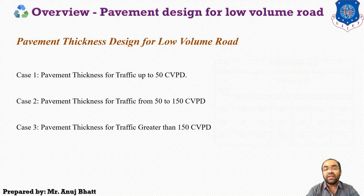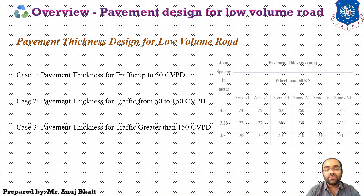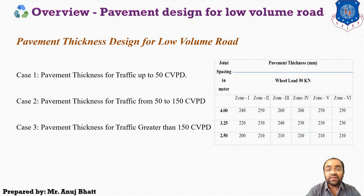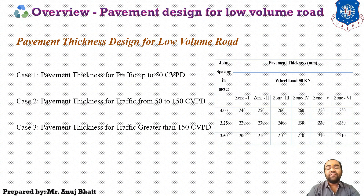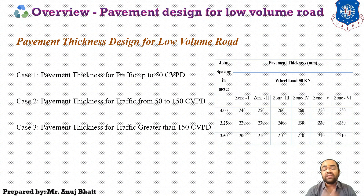Case 3 covers traffic greater than 150 CVPD, for which a table is also provided. The criteria here require a CBR value for subgrade of 8%, a cementitious base course with a total thickness of 200 mm, and concrete of M30 grade. The effective subgrade reaction value for design is 100 MPa/m. Fatigue cracking of the pavement slab is considered because of the heavier traffic around 150 commercial vehicles per day.